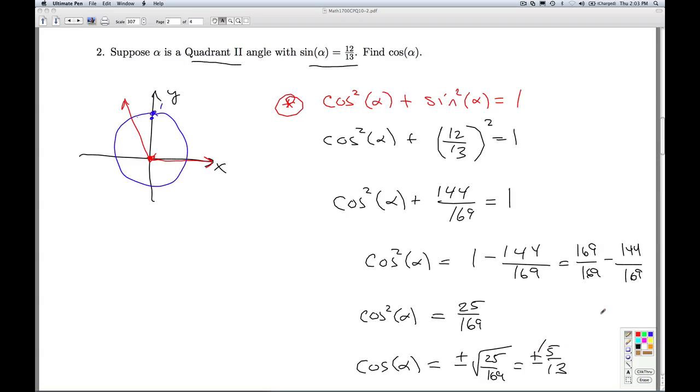Now, which of these do we pick? That's the next question, and that all depends on the angle alpha. We know alpha is a quadrant 2 angle, and in quadrant 2, the x-coordinate, which is going to be the cosine, the x-coordinate of this point on the unit circle is going to be negative. So that's going to be negative. So our final answer, which we'll have to tuck in over here, cosine of alpha is negative 5 thirteenths. So that'll do it for number 2.